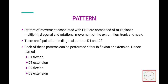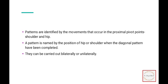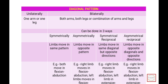Patterns are multi-planar, multi-joint, diagonal and rotational movements of the extremities, trunk, and neck. There are two pairs of diagonal patterns: D1 and D2, further classified into flexion and extension — hence named D1 flexion, D1 extension, D2 flexion, and D2 extension. Patterns are identified by the movement that occurs at the proximal pivot points — shoulder and hip. A pattern is named by the position of the hip or shoulder when the diagonal pattern is completed. Patterns can be carried out bilaterally or unilaterally — one arm, one leg, both arms, both legs, or combinations.